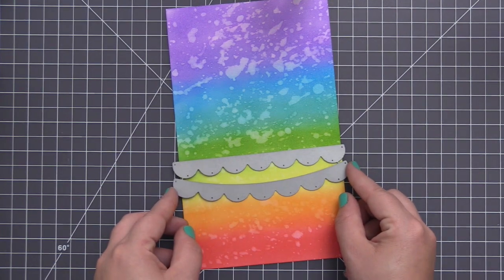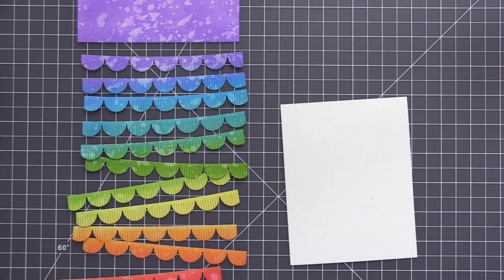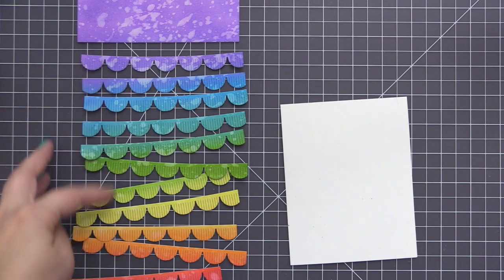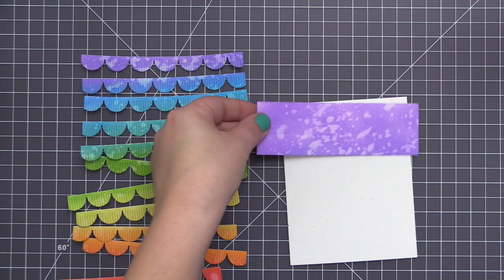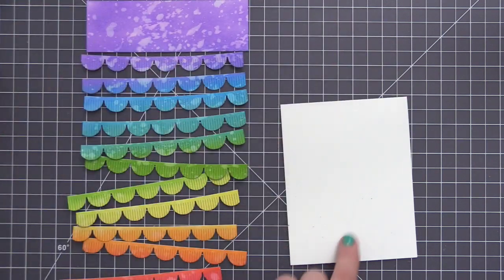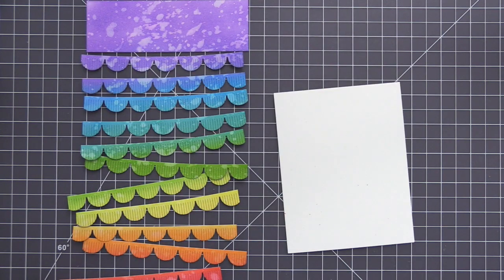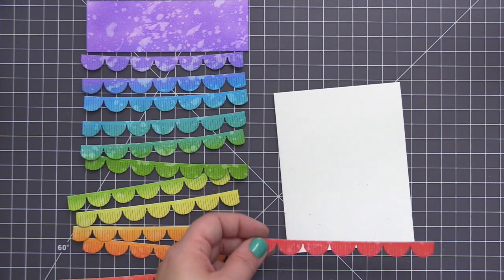Now I'm going to start at the bottom with the red and just work my way up and just repeatedly cut this out until I have a whole bunch of these. So now you can see here I've run these all through and I have this really big purple piece that we're going to add to the top, and then I have all of the fringe scallop borders going down in rainbow order from the top to the bottom.